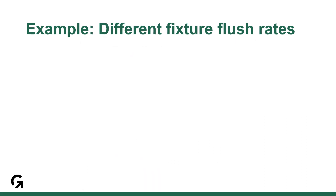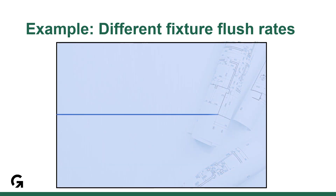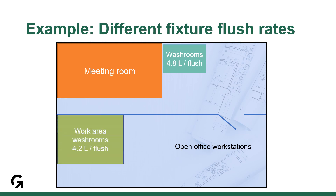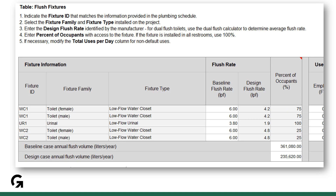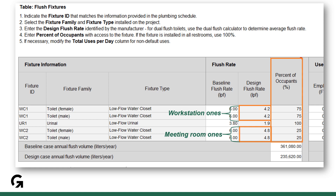So where does the percent of occupants feature come in handy? Say you have an owner-occupied office with a meeting room that's separate from your open office workstations. Say you have a small set of washrooms near the meeting room that have a 4.8 liter flush rate, and another larger set near the workstations with a lower flush rate. The percent of occupants column allows you to separate the meeting room fixtures from the workstation ones, estimating usage as 75% and 25%, for example.